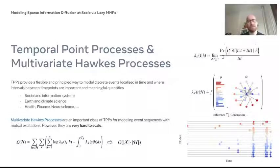In this work we focus specifically on multivariate Hawkes processes, which are an important class of TPPs that allow to model event sequences with mutual excitations. As such, they are very promising to model diffusion processes. However, they are notoriously hard to scale.